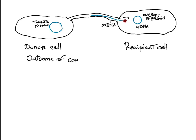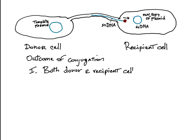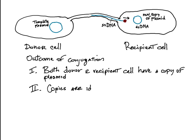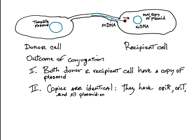The outcome of plasmid conjugation is the following. First, both donor and recipient cell have a copy of the plasmid. Second, the two copies are identical. Each has ORI-R, ORI-T, and all plasmid-encoded proteins.